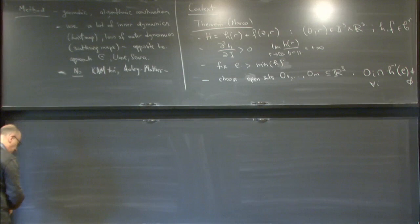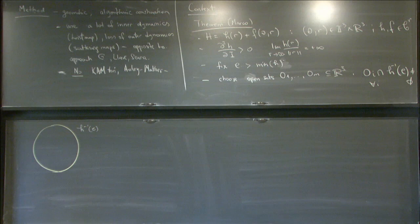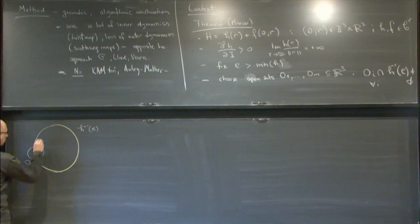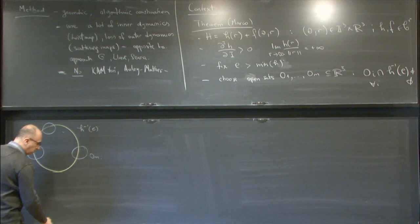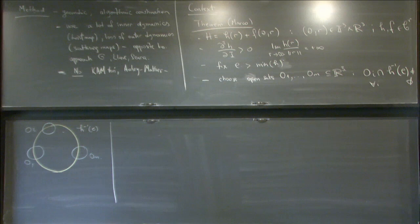The picture is the following: this is the energy level, a compact surface in R^3, and the open sets are a bunch of targets that you want to reach. So you give yourself these targets O1, O2, and so on. You want to prove that in the perturbed system, for appropriate choices of the perturbation, there exist trajectories that visit these targets in the prescribed order.